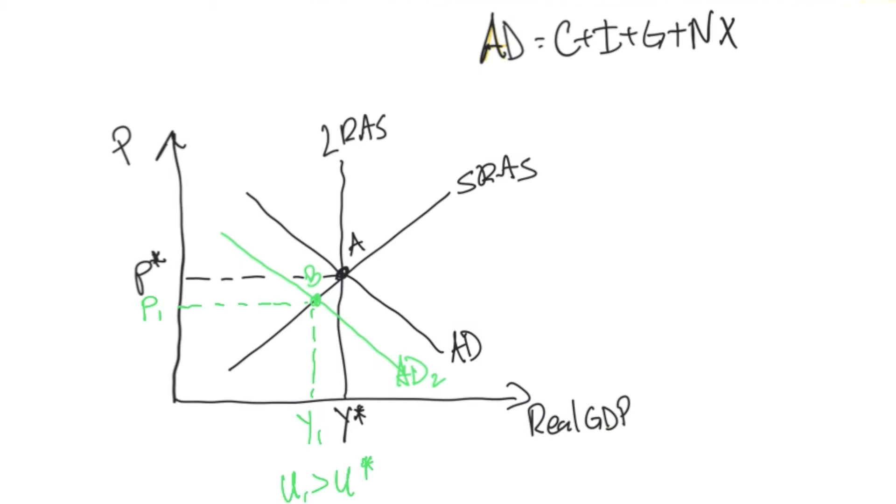And in this case, that will cause the short run aggregate supply curve to increase because firms are able to have lower cost resources, labor in this situation. So our short run aggregate supply curve is going to increase.